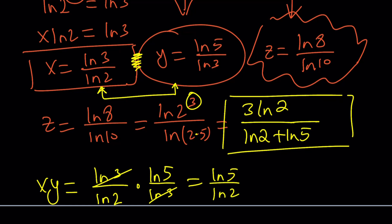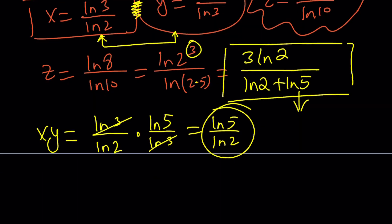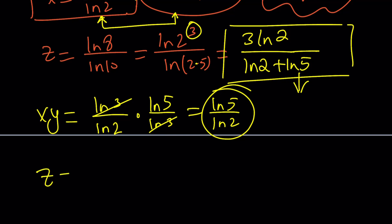Now, how could you express this in terms of that? Easy, using ratios of proportions. Since ln 2 is at the bottom, let's divide everything by ln 2. So, z is 3 ln 2 over ln 2 plus ln 5. Divide the top by ln 2. Divide the bottom by ln 2. And you're going to get what you need.